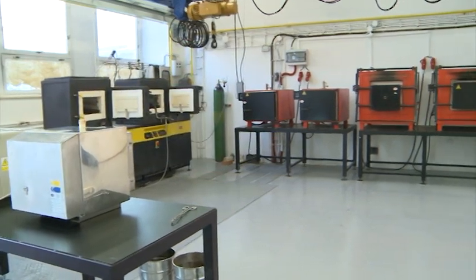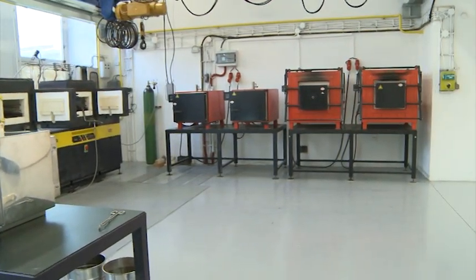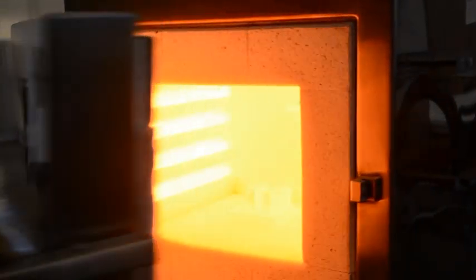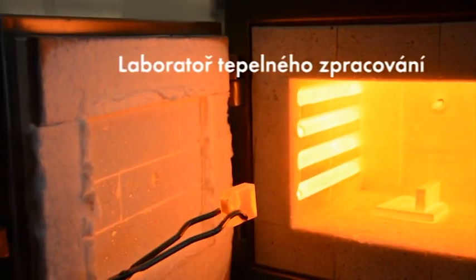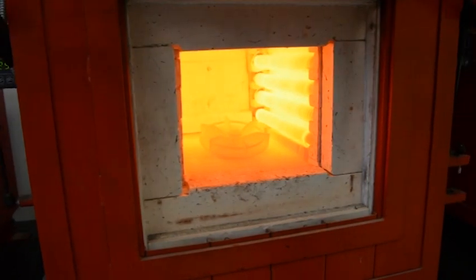Laboratoř teplného zpracování disponuje poloprovozem chemicko-tepelného zpracování, samostatnými komorovými pecemi s normální atmosférou do 1000 stupňů Celzia a pecí s možností ochrané atmosféry nebo vákua do 1100 stupňů Celzia.